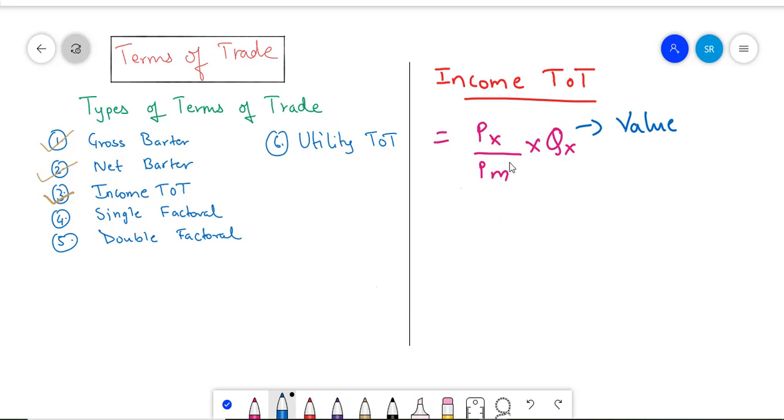This tells us for every one unit of prices we pay for our imports, how much value do we get for our exports? The idea is that we need to have the value of exports being equal to the value of imports at the end.